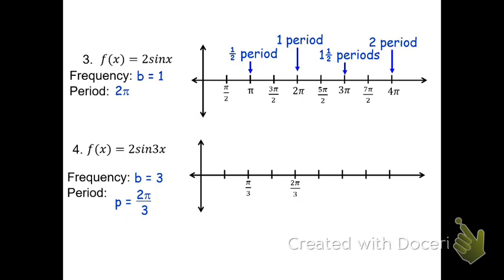Let's use that to fill in the half cycles. 1pi over 3 plus another pi over 3 is 2pi over 3. 2pi over 3 plus another pi over 3 would be 3pi over 3, but we want to reduce the fraction — 3 thirds is 1, so that'll be 1pi. 3 thirds plus another third is going to be 4 thirds, so the full two cycles is going to be 4pi over 3. The way we did that, we took half of the top number — half of the numerator, 2pi, was 1pi — which means we can count by pi over 3s.